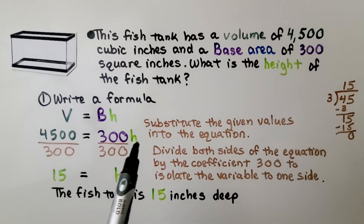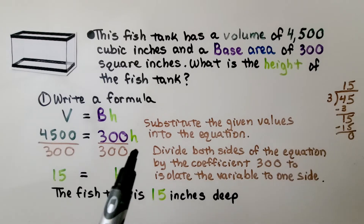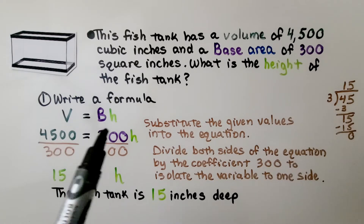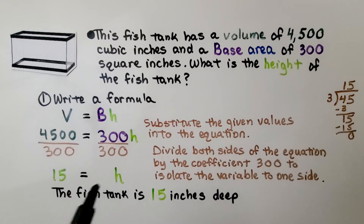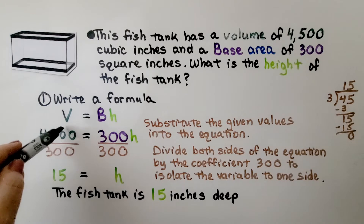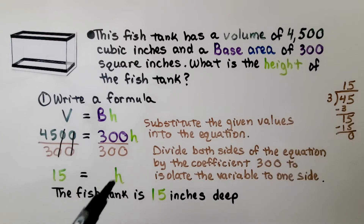To isolate h to one side of the equation, we divide both sides by the coefficient 300. 300 divided by 300 — same numerator and denominator — gives us 1, so we have 1h. And 4,500 divided by 300 is the same as 45 divided by 3, which is 15. The fish tank is 15 inches deep.